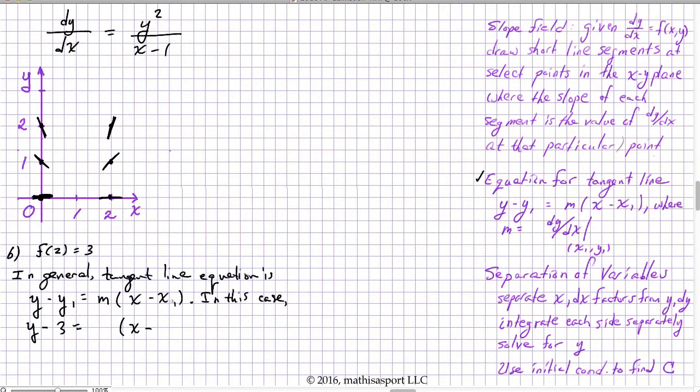So what goes here? The slope. And we just have to plug in 2, 3 into this situation. So 3 is the y. 3 squared is 9. 2 minus 1 is 1. So we have 9 over 1. And so our slope is 9.